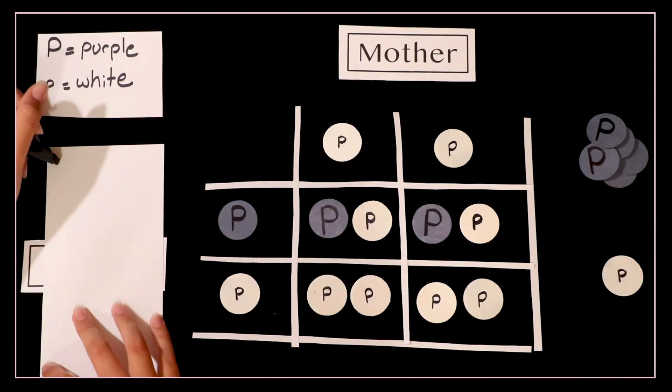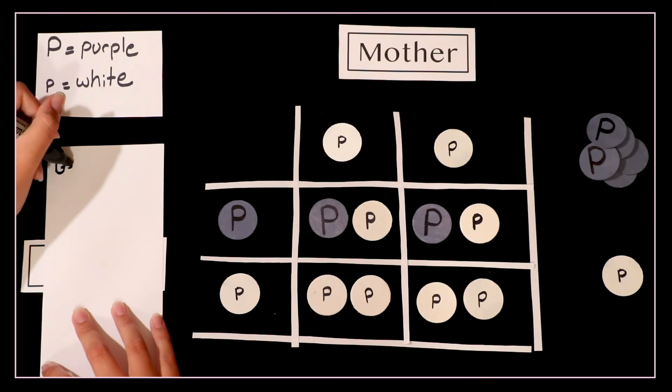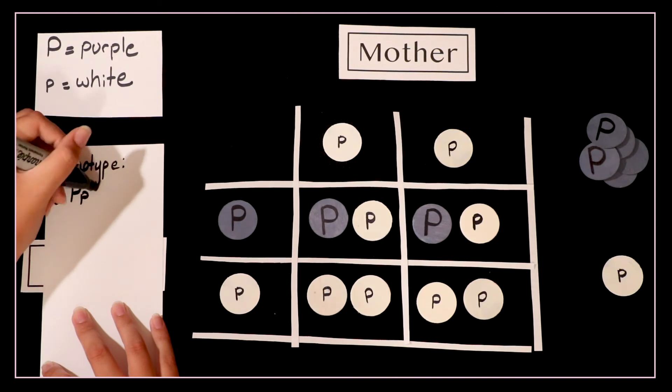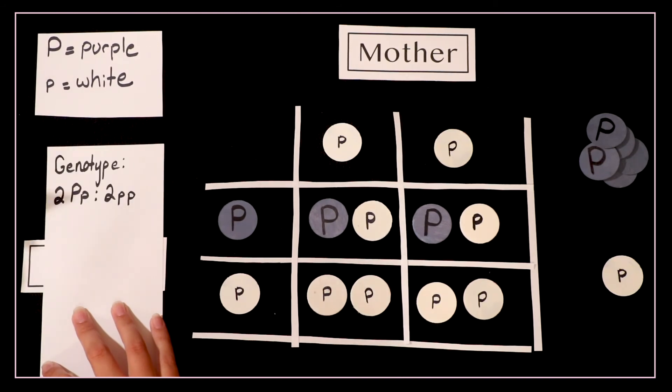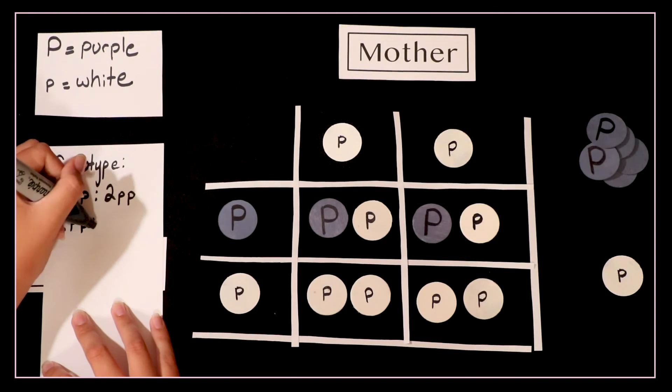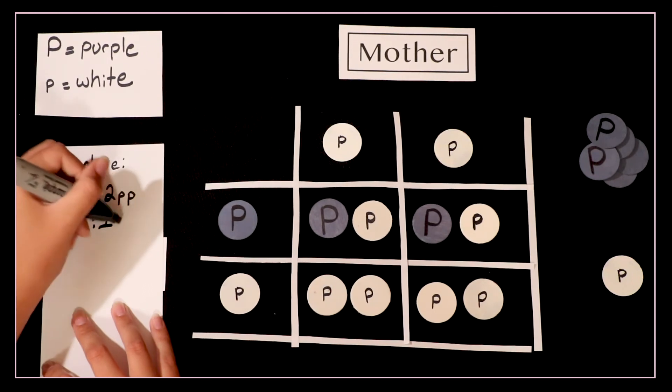Once filled you have to complete the question by writing out the answer. Start with the genotype. Two big P little p and two little p little p. Just like fractions in math ratios in bio need to be reduced down. The final answer for genotype is one heterozygous and one homozygous recessive.